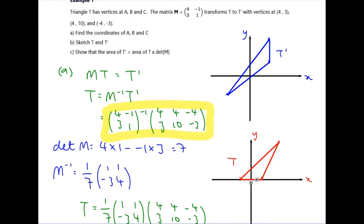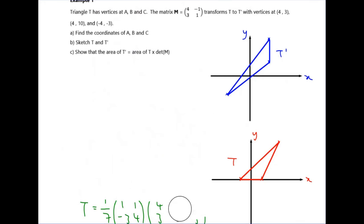Finally, this wants us to show that the area of the image of T is equal to the area of T times the determinant of M. I'm going to make a bit more space on here. I'm going to clear some of this. First thing, we've already calculated the determinant of M as 7.